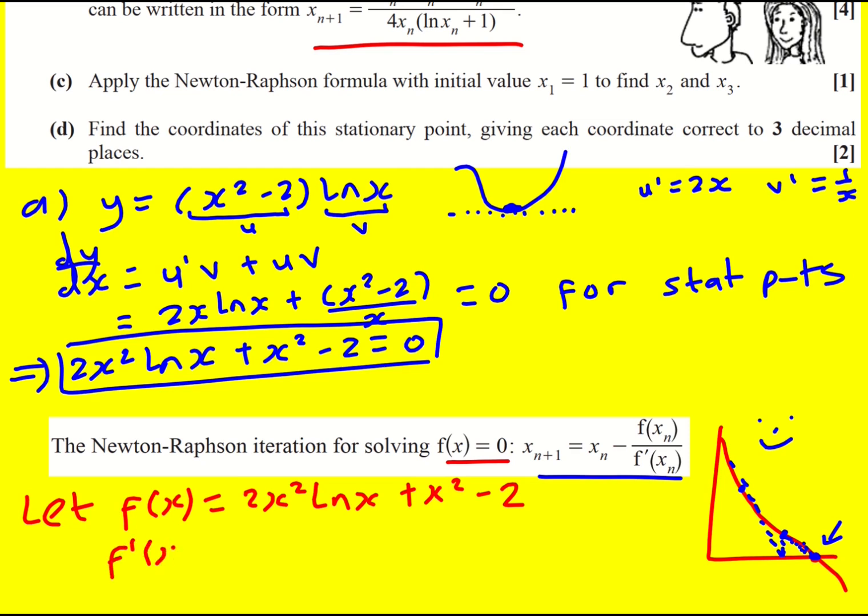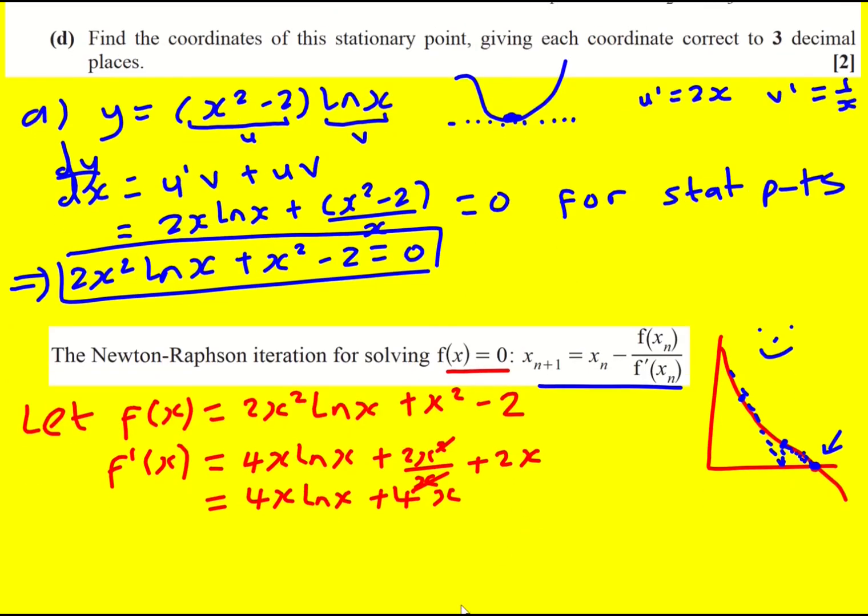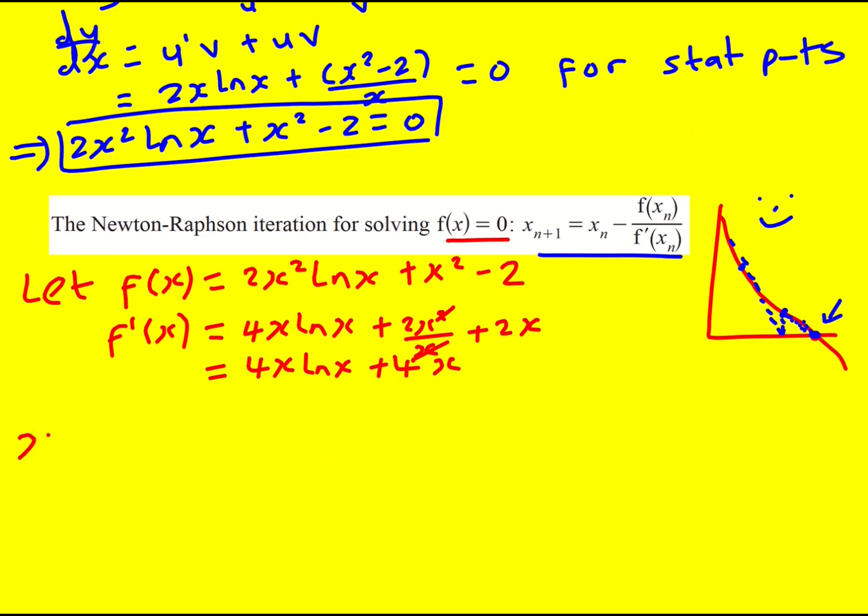So we need to find f dash x. And we're going to have to use the product rule again here. I'm going to do it a bit more quickly this time. So I'm just going to differentiate 2x squared to give 4x and times by ln x. And then I'm going to add 2x squared all over x. And I'm going to be adding 2x here. So the x and the x squared cancel, so I'm going to be adding 2x plus 4x.